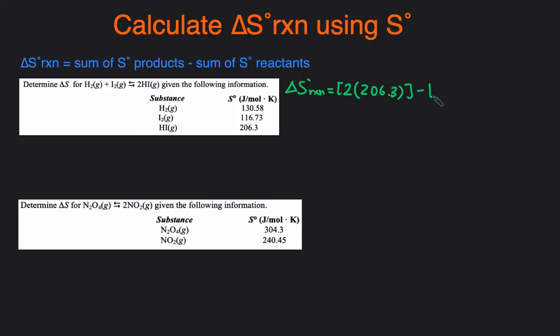That's the sum of the products since we only have one product. Now we subtract the sum of the reactants. On the reactants side, we have H2 plus I2, so we just add the H2 and I2 values: 130.58 plus 116.73.